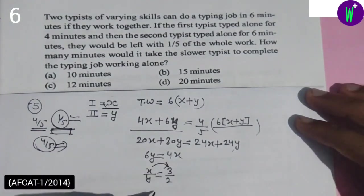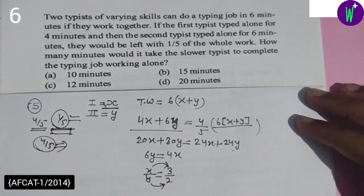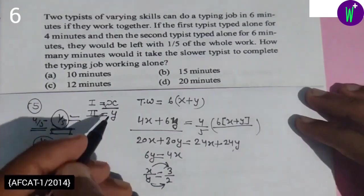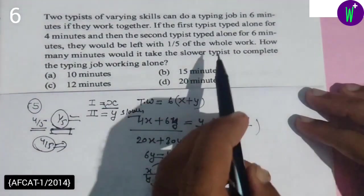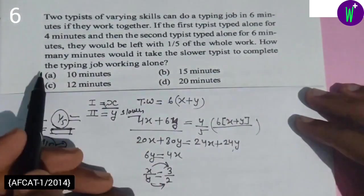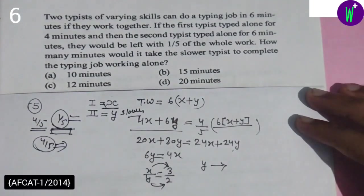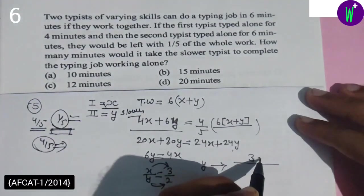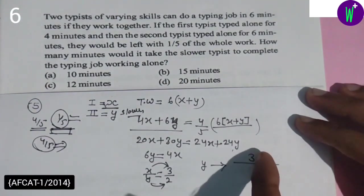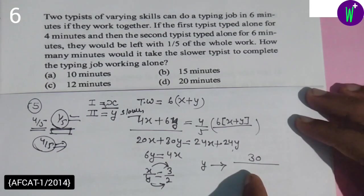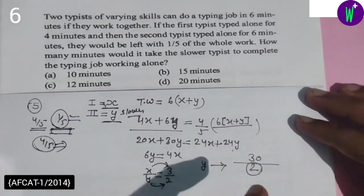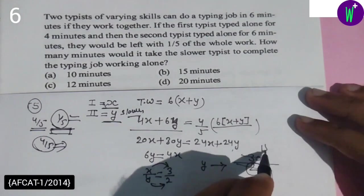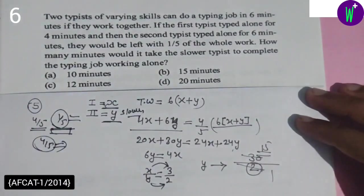So if x value is 3, then y value is 2. How many minutes would it take the slower typist to complete the typing job working alone? We need to find how much time y takes. The total work is 3 plus 2, multiplied by 6, which gives 30. Total work divided by efficiency gives time. y equals 2, so if he does 2 units in one minute, 30 units of work will take 15 minutes. So option B is the answer.